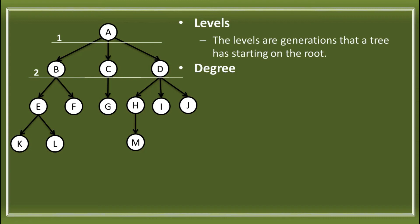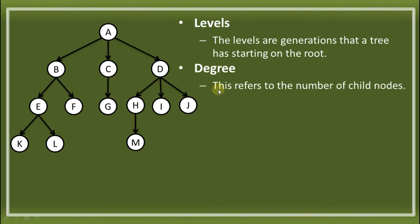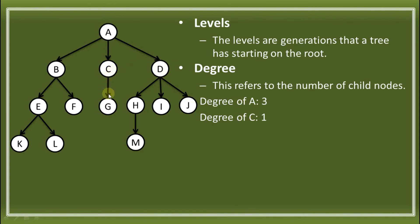Next, we also have the degree. Degree refers to the number of child nodes of a specific node. For example, the degree of A: counting the child nodes of A, we have 1, 2, and 3 — that is B, C, and D. The degree of C: it has only one child node. Degree is the number of nodes directly below a specific node.